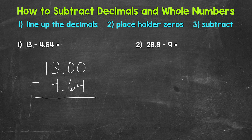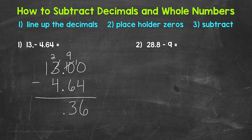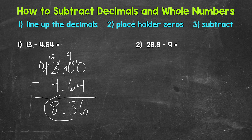Let's start with the hundredths place: zero minus 4, which we need to borrow. We need to go all the way over to the 3 — borrow, this is now 2 — then we have 10, which is now 9, and we end up with 10 minus 4, which gives us 6. Then we have 9 minus 6, which gives us 3. Bring the decimal straight down. Then we have 2 minus 4, which we need to borrow — we borrow from the 1, which is now 0 — and now we have 12 minus 4, which gives us 8. Our final answer is 8 and 36 hundredths.